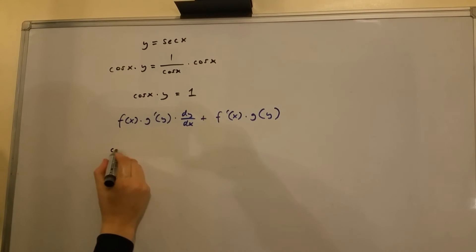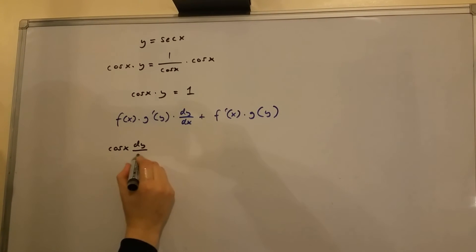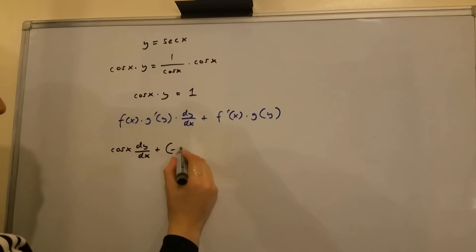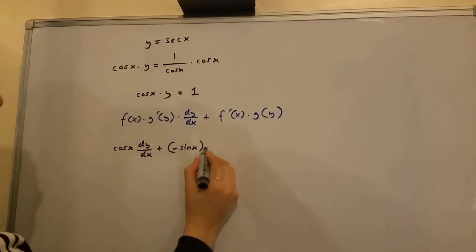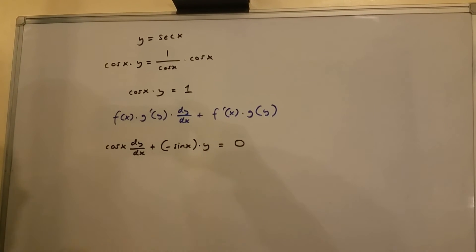So from here we're going to get cos x multiplied by dy over dx plus minus sine x multiplied by y equals 0.